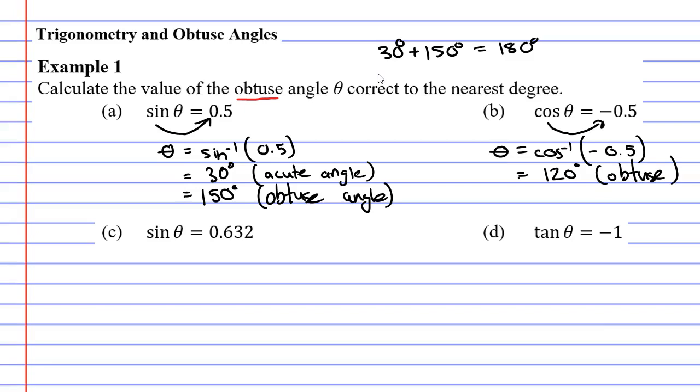Okay so we can go straight to question C now. Following the same process bring sine to the other side except make it inverse sine. Theta equals sine with a negative one in brackets 0.632.